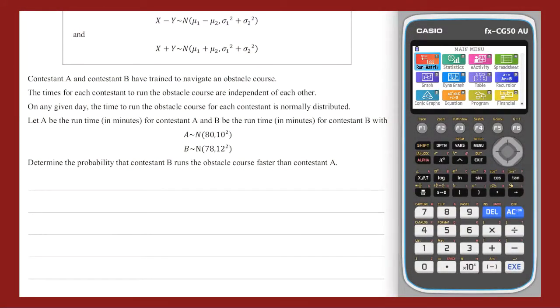Question 19. To determine the probability that contestant B runs the course faster than contestant A, I can consider the variable D, being the difference between their two times. Based on the information provided about the difference between two normally distributed random variables, I can say that my variable D will be normally distributed with a mean of 78 minus 80, and a variance of 10 squared plus 12 squared. This means that D has a mean of negative 2, and a standard deviation of square root 244, being the square root of the variance.